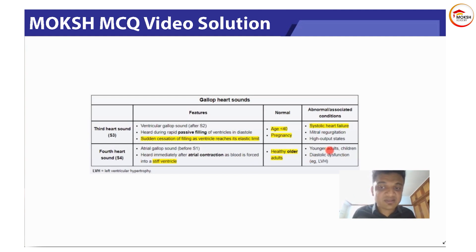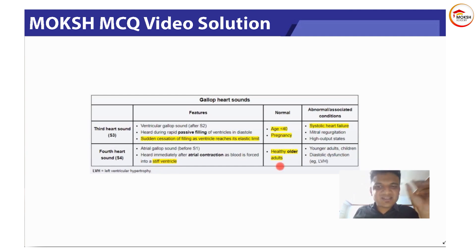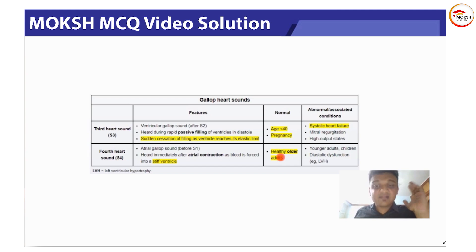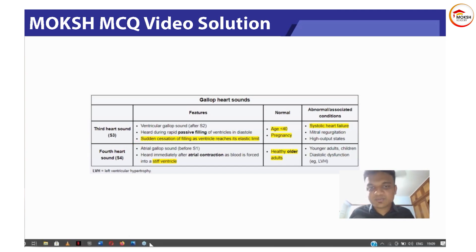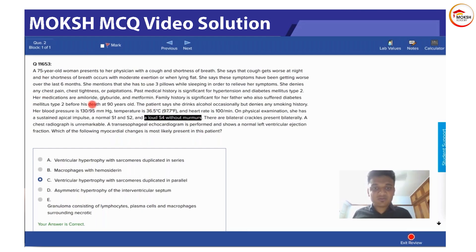S4 can be normal in older adults because in older adults the ventricle becomes stiff. This is called the atrial gallop sound.